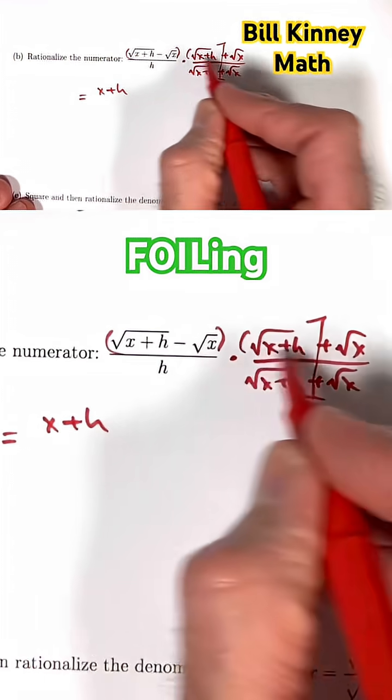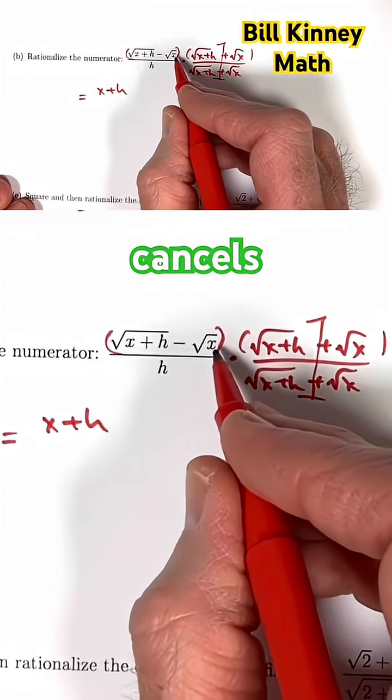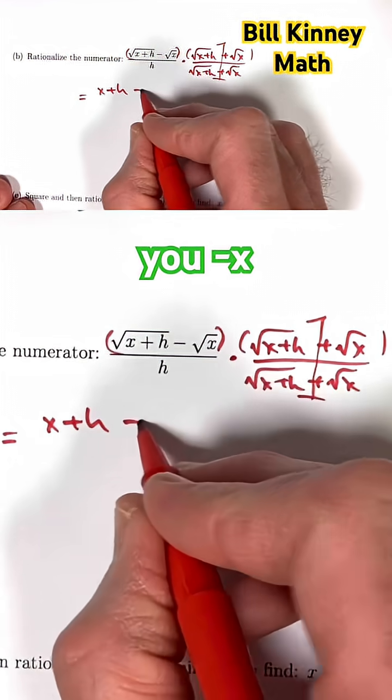You get square root of x plus h times itself is just x plus h. Outside and inside terms from foiling cancel. This times this cancels with this times this.